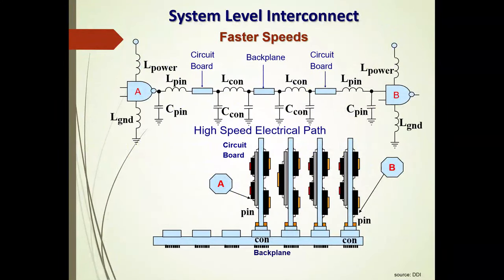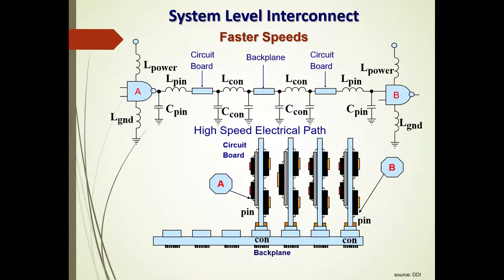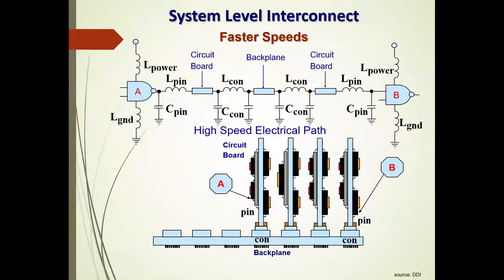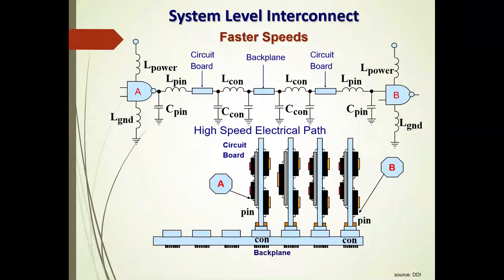At the system level, consider a signal going from driver A all the way to receiver B, through some kind of motherboard, daughterboard, or backplane configuration. With the rise times available on current high-performance chips, all of the parasitics — inductances and capacitances — along that electrical path from A to B now come into play.